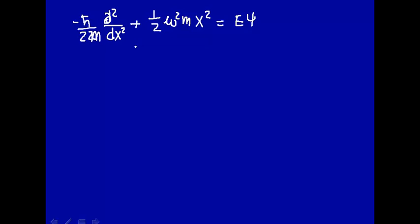Let's manipulate this equation. Let's multiply both sides of this equation by -2m/ℏ². This should be multiplied by 𝜓. So let's multiply both sides of this equation by -2m/ℏ².